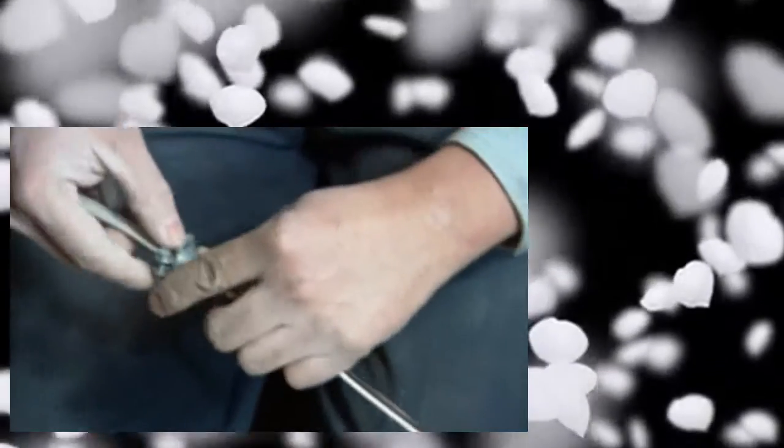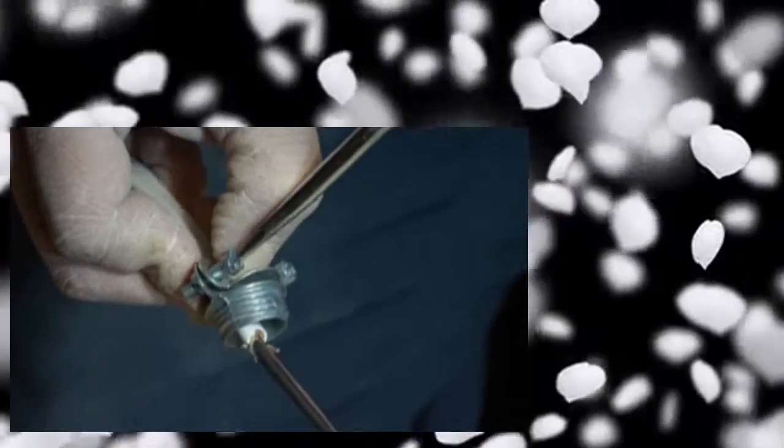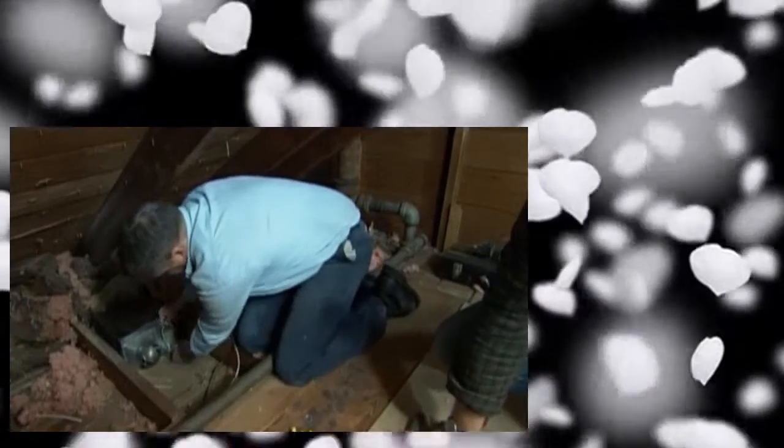Up here in the attic, we have the Romex we ran earlier from our switch. We're going to put the Romex connector on, pinch it down and just screw it in place. It's important that you make sure you use the clamp to hold the Romex in place rather than just putting the wire in the junction box. We don't ever want that connection to come undone.